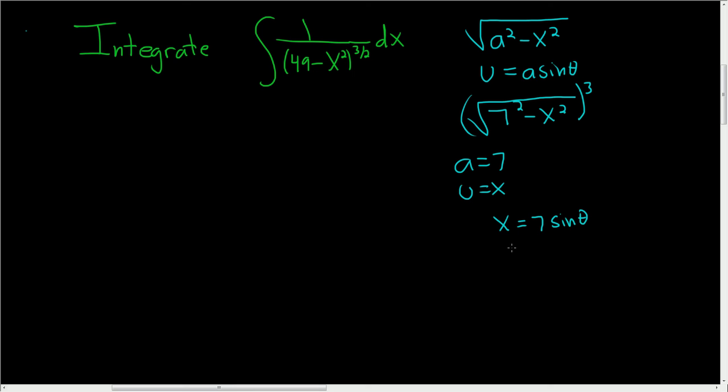Now all we'll do is compute dx. So dx is equal to 7 cosine theta d theta. And then we'll work out this piece here in the denominator.